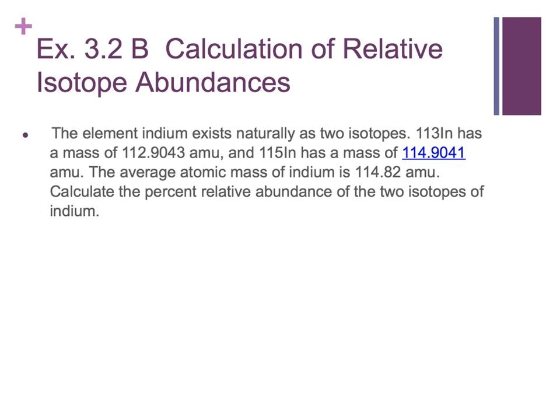Now, we know what indium is on the periodic table, so we can just look it up. It has two isotopes, indium-113 and indium-115, with their actual masses there. The average atomic mass of indium is 114.82 on the periodic table. Calculate the percentages.